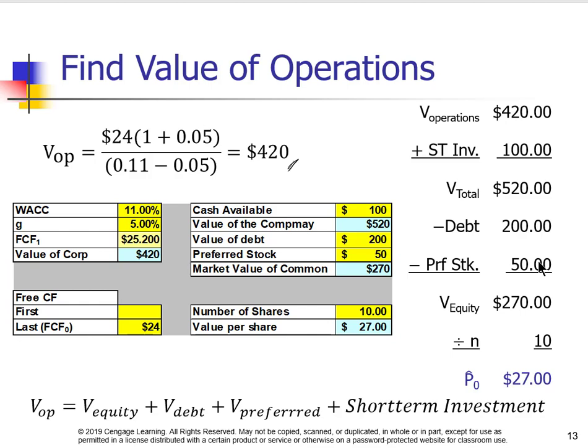From the value of operations, we incorporate the other numbers. We take cash available of $100, debt of $200, and preferred stock of $50. So we take $420, add to it the short-term investments — meaning the whole company is worth $520 — then subtract $200 for debt and subtract $50 for preferred stock, giving us $270 as the value of equity. The value of operations equals equity plus debt plus preferred plus short-term investments. Solving for value of equity and dividing by the 10 million shares gives us roughly $27 per share.